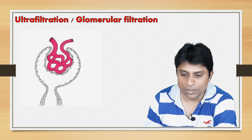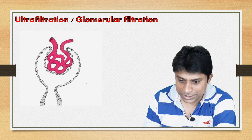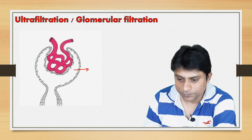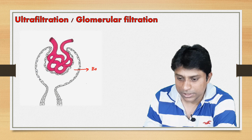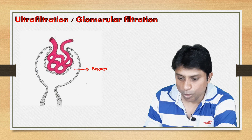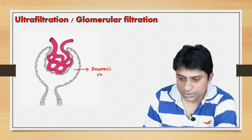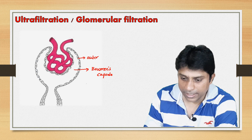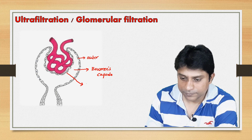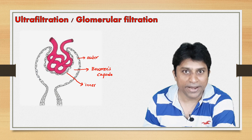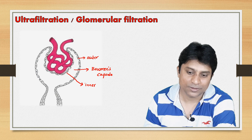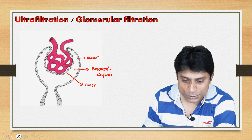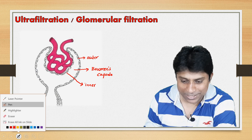This structure is called Bowman's capsule. Bowman's capsule is a double-walled cup with an outer layer and an inner layer. These walls are all made of squamous cells.